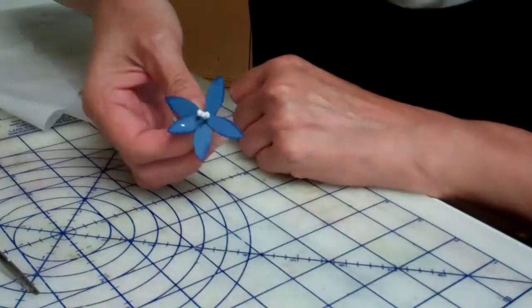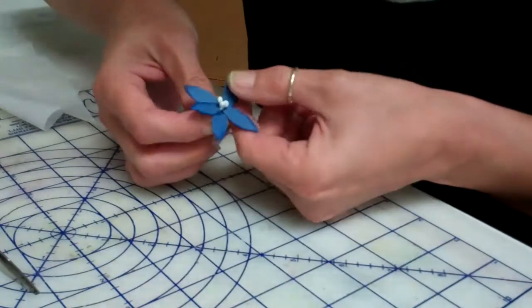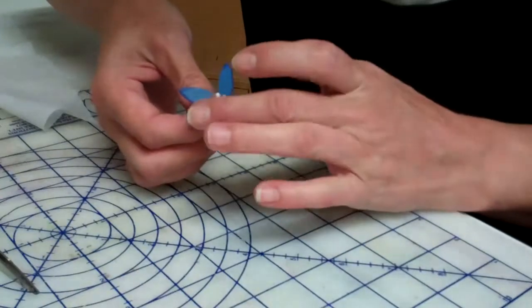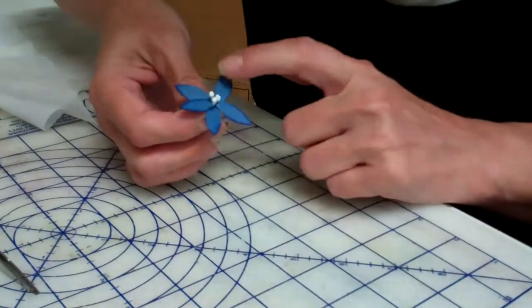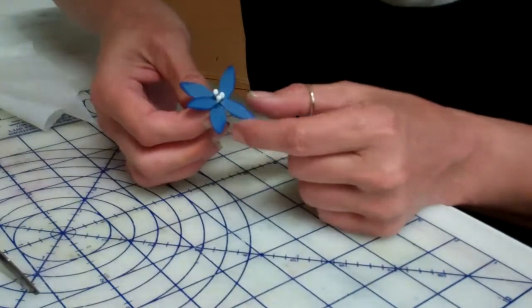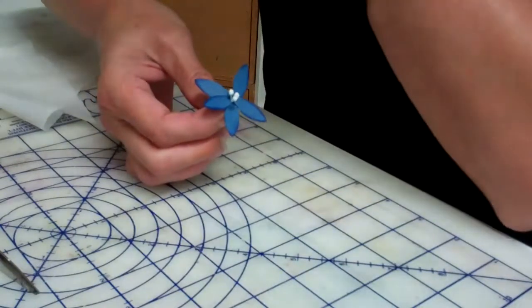And that's the flower that I used on my page. And like I said, if you don't have a cutting machine, they're just an oval shaped leaf that's just slightly pointed on the tip.